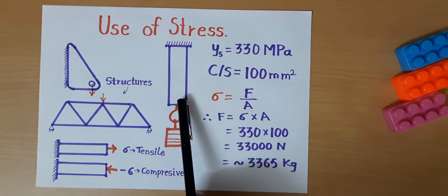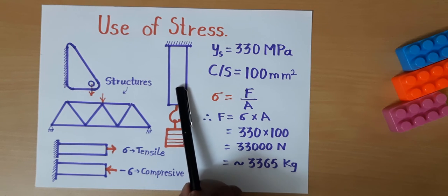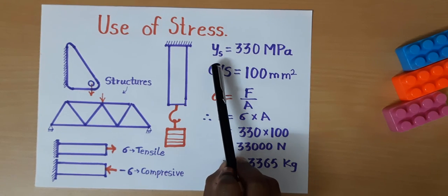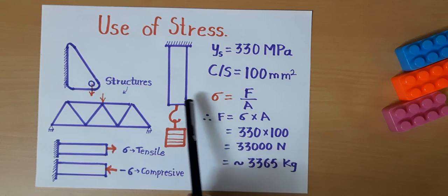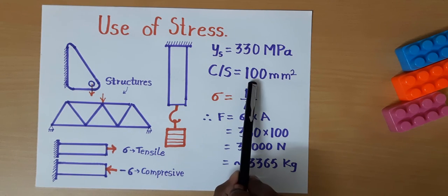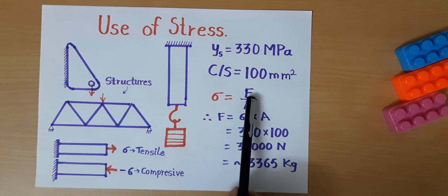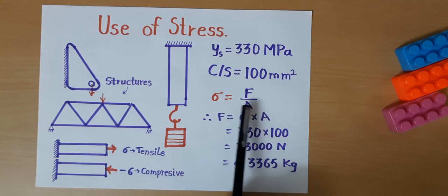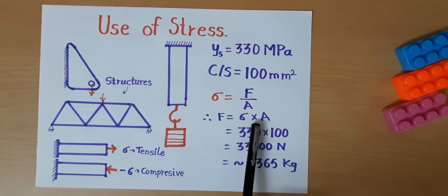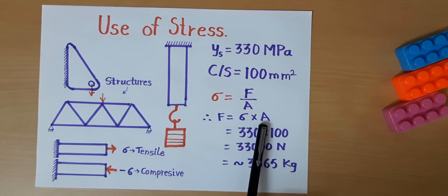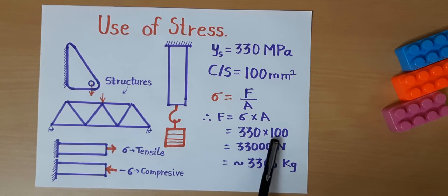Let's assume this is made of structural steel and its yield strength is 330 MPa. Its cross section is 100 mm square. By rearranging the terms of this stress equation, we get force equals stress multiplied by cross section area. By doing this calculation...